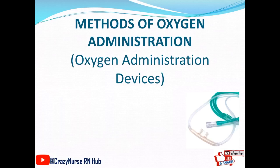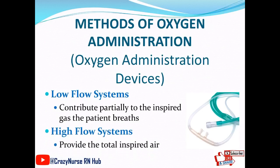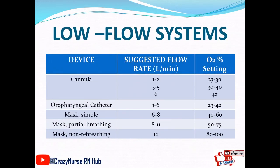Next, we have the methods of oxygen administration. Oxygen administration devices are categorized as low flow systems and high flow systems. Low flow systems contribute partially to the inspired gas the patient breathes, while high flow systems provide the total inspired air. Examples of low flow system devices include the nasal cannula, oropharyngeal catheter, simple mask, partial breathing mask, and non-rebreathing mask, each with suggested flow rates in liters per minute and oxygen concentration settings.